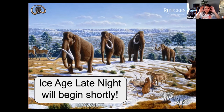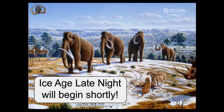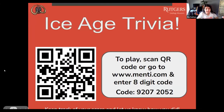We have a trivia that we will be doing first. So Lauren, are you ready for the trivia? To play, you can scan the QR code here on the screen, or you can go to menti.com and enter this eight-digit code, which is 92072052. Keep track of your score and let us know how you're doing at the end. If you are not able to join Menti, you can also post your answers in the chat.